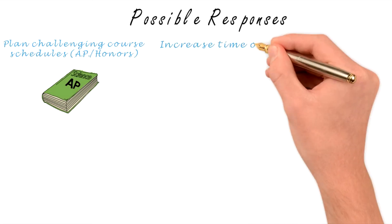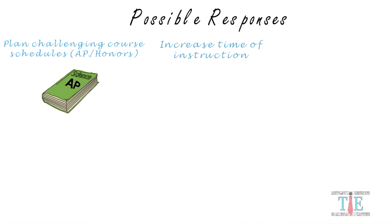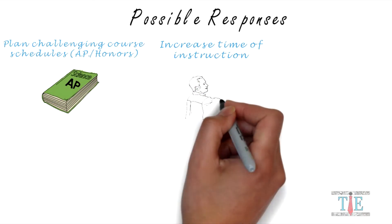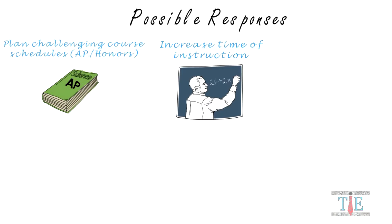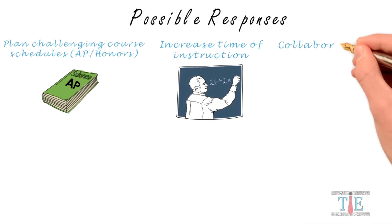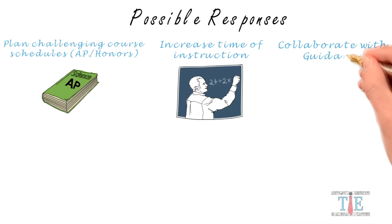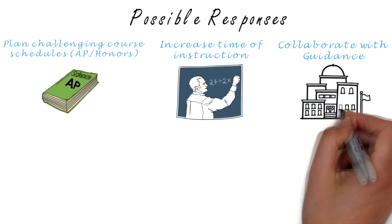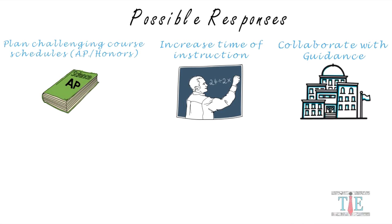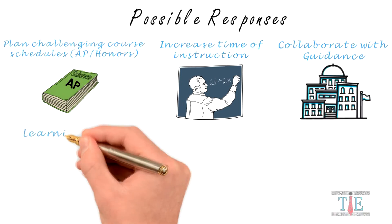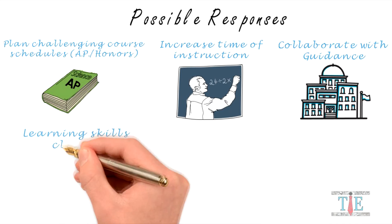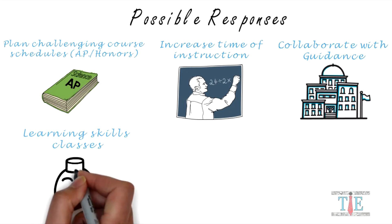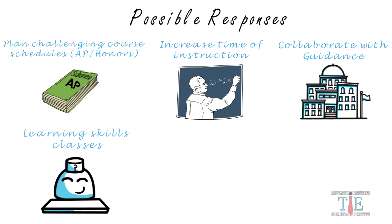Second, increase the time of instruction — both on the classroom level and student schedule. Those extra hours can make a difference in college. Third, collaborate with guidance. You would like to see teachers have productive discussions with guidance counselors about creating paths that will prepare students for college. Next, provide learning skills classes. Learning skills and test-taking strategies will first help students get into college and second, teach them lifelong learning strategies.